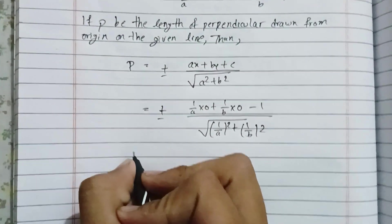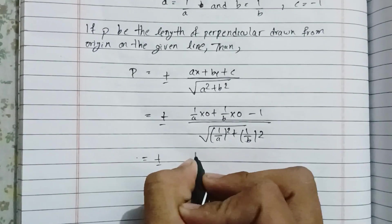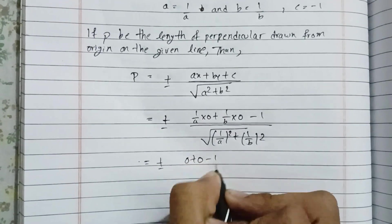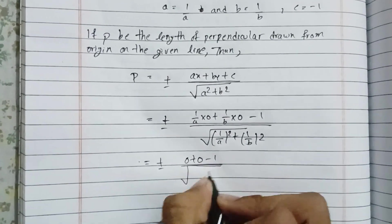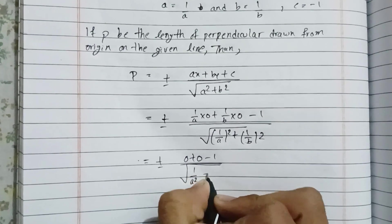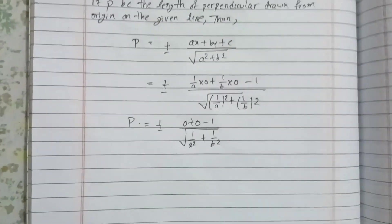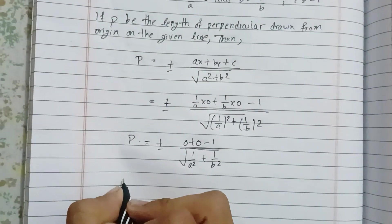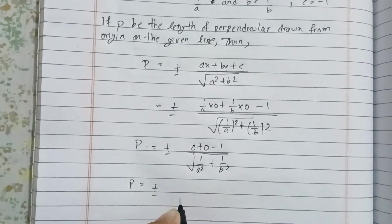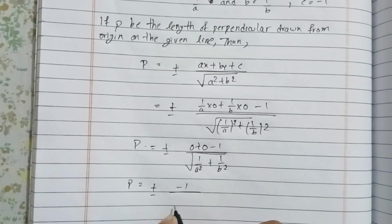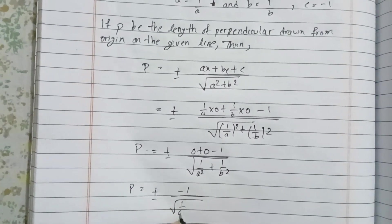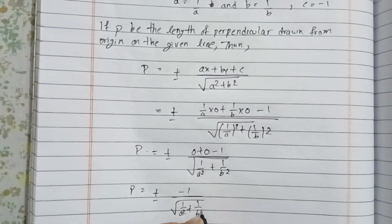This equals plus or minus zero plus zero minus one over under root one by a square plus one by b square, which equals minus one over under root one by a square plus one by b square.